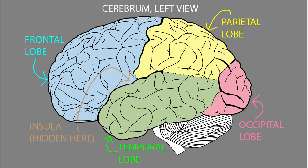The cerebral cortex is also divided into functional areas: primary cortex and association cortex. Primary cortical areas perform more basic processing of motor or sensory information. Association cortical areas perform more complex processing of one kind of motor or sensory information, or they process multiple types, or they perform some of the higher neural functions.